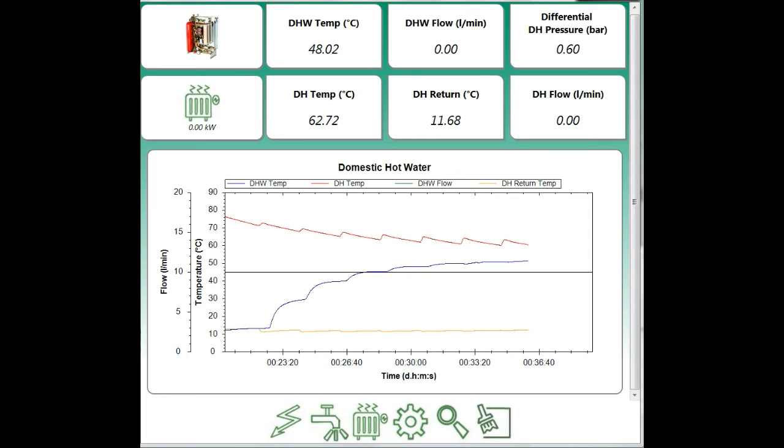Now, this is ten minutes later. You can see how there's been a few pulses now. And the domestic hot water temperature has crept up above the target. The district heating flow temperature has also dropped. But we can see the pulses clearly.